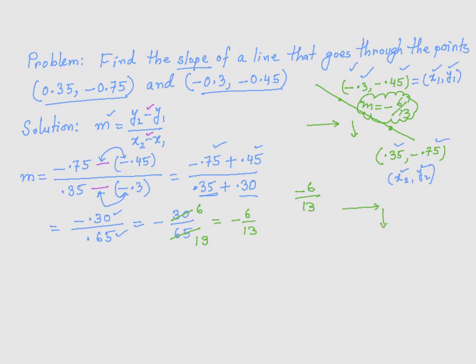Or I could write this number as 6 over negative 13. That tells you if you move 13 units to the left, you are going to move up 6 units. That's what it means.